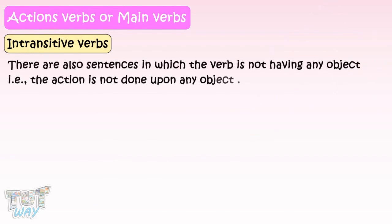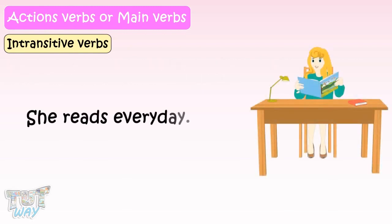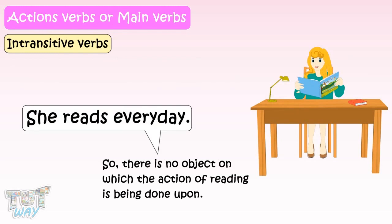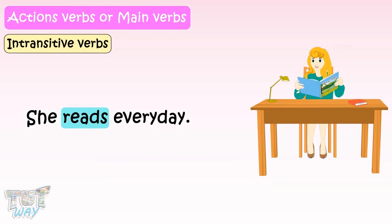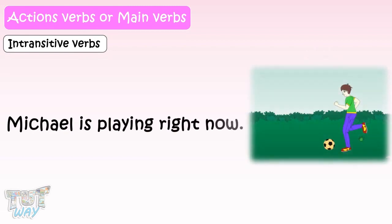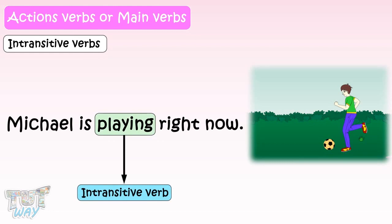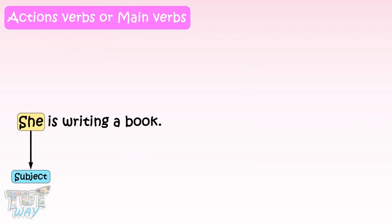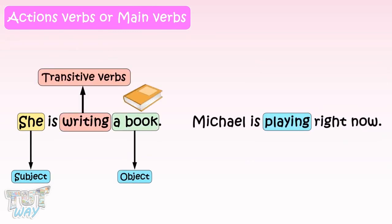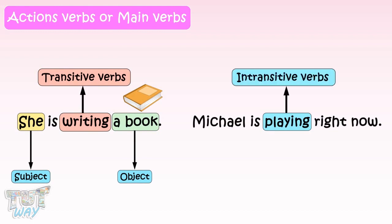There are also sentences in which the verb does not have any object — that is, the action is not done upon any object. For example, 'She reads every day.' There is no object on which the action of reading is being done. Such verbs are called intransitive verbs. Another example: 'Michael is playing right now.' We know that Michael is playing, but we do not know what Michael is playing. So, 'playing' is an intransitive verb here. Remember, verbs which have an object are transitive; those which do not have an object are intransitive.